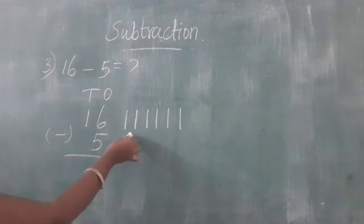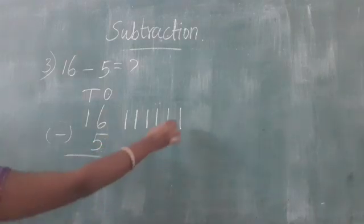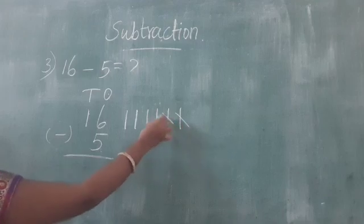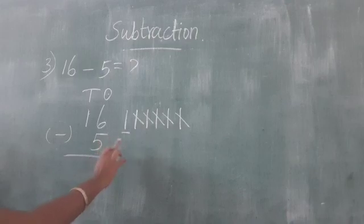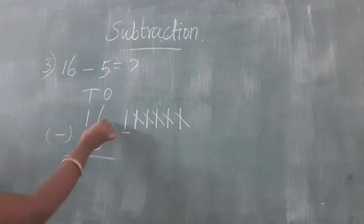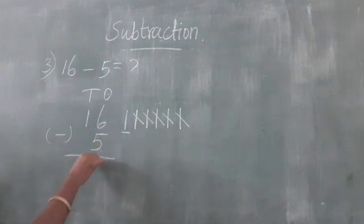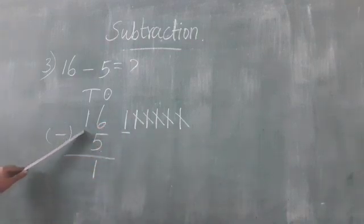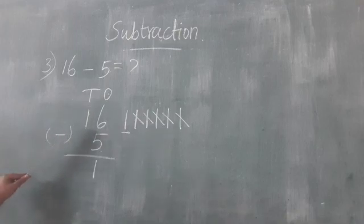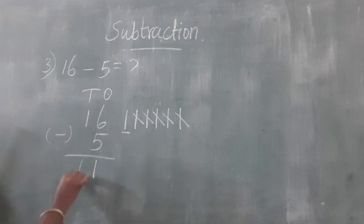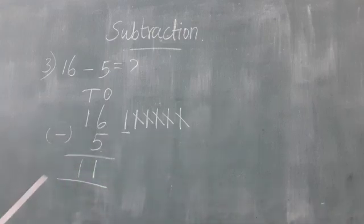So we cut 5 lines: 1, 2, 3, 4, 5. Remaining 1. So 6 minus 5 equals 1. Next we subtract the 10's place. So write down number 1. Answer: 11.